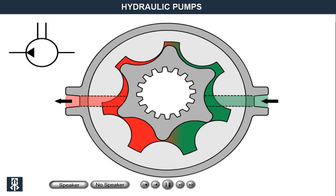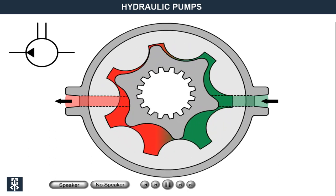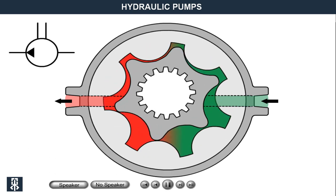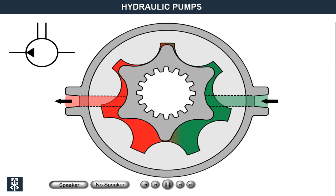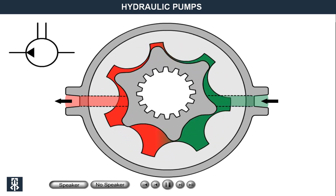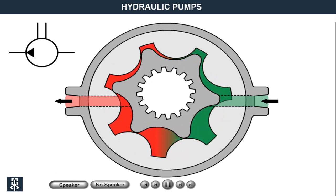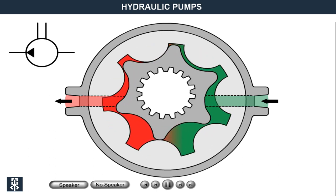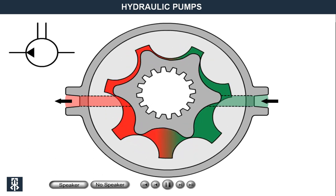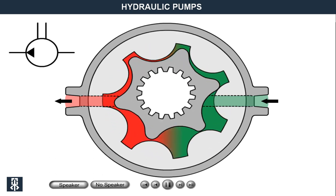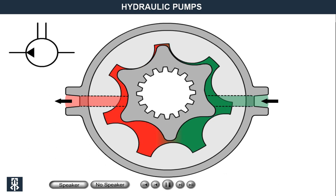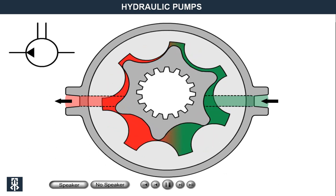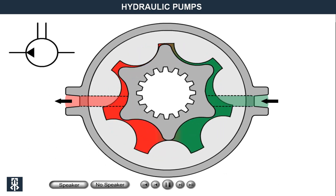Rotor gear pumps are characterised by being small and quite insensitive to impurities, can be run with thin flowing oil, give flow with small variations, have a low price, have fixed displacement, and can generally work with slightly lower pressure than corresponding gear pumps.